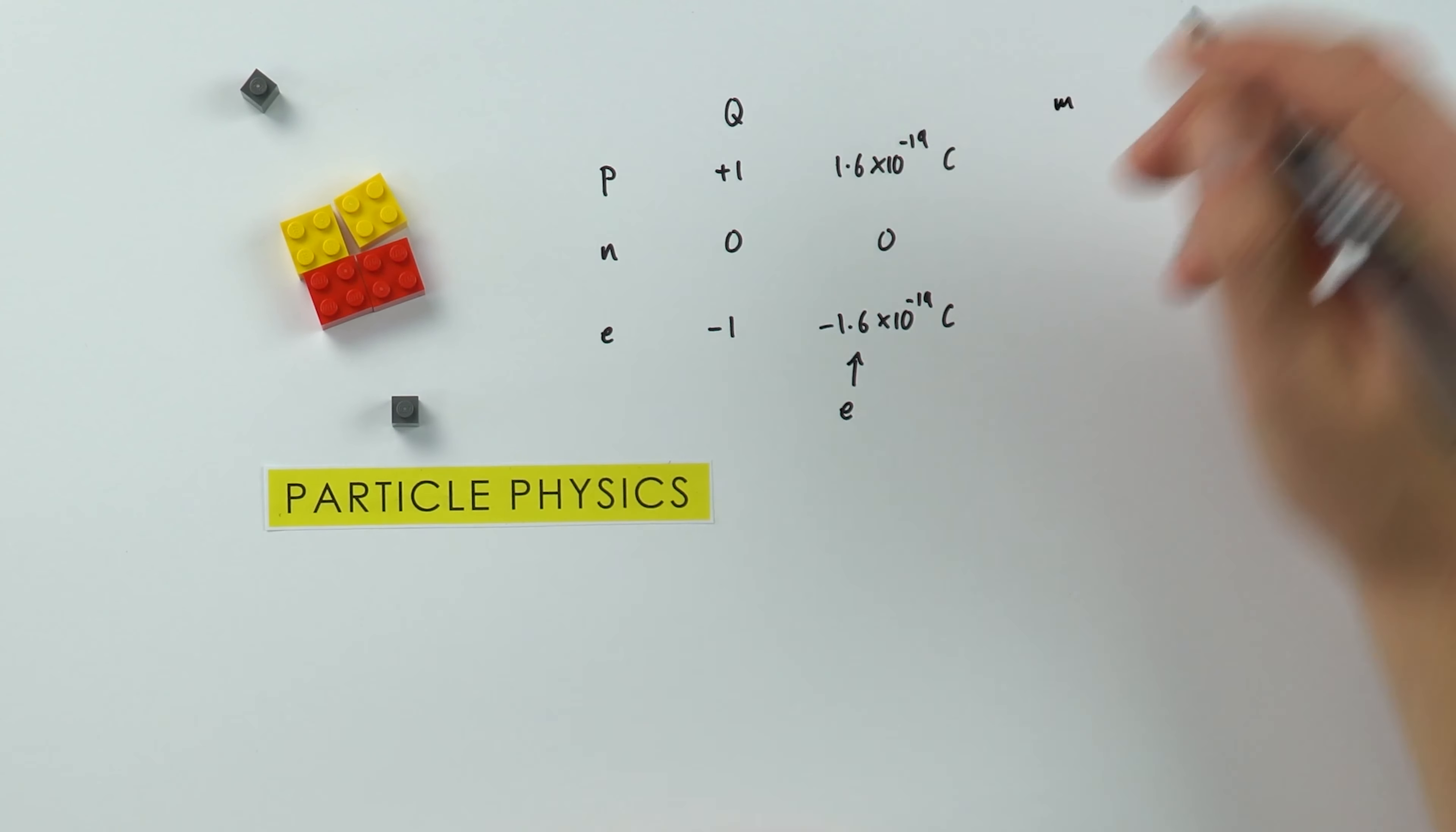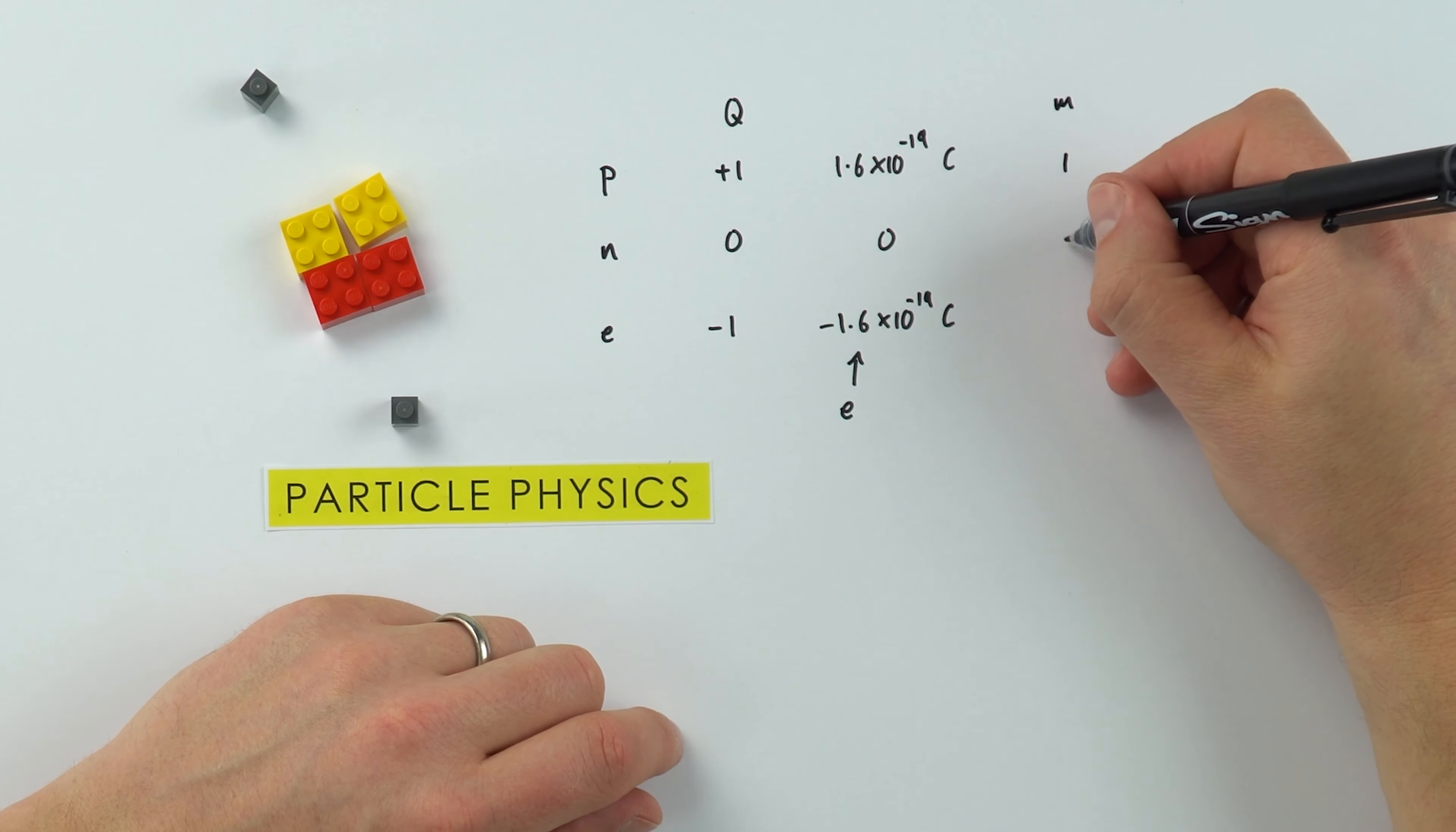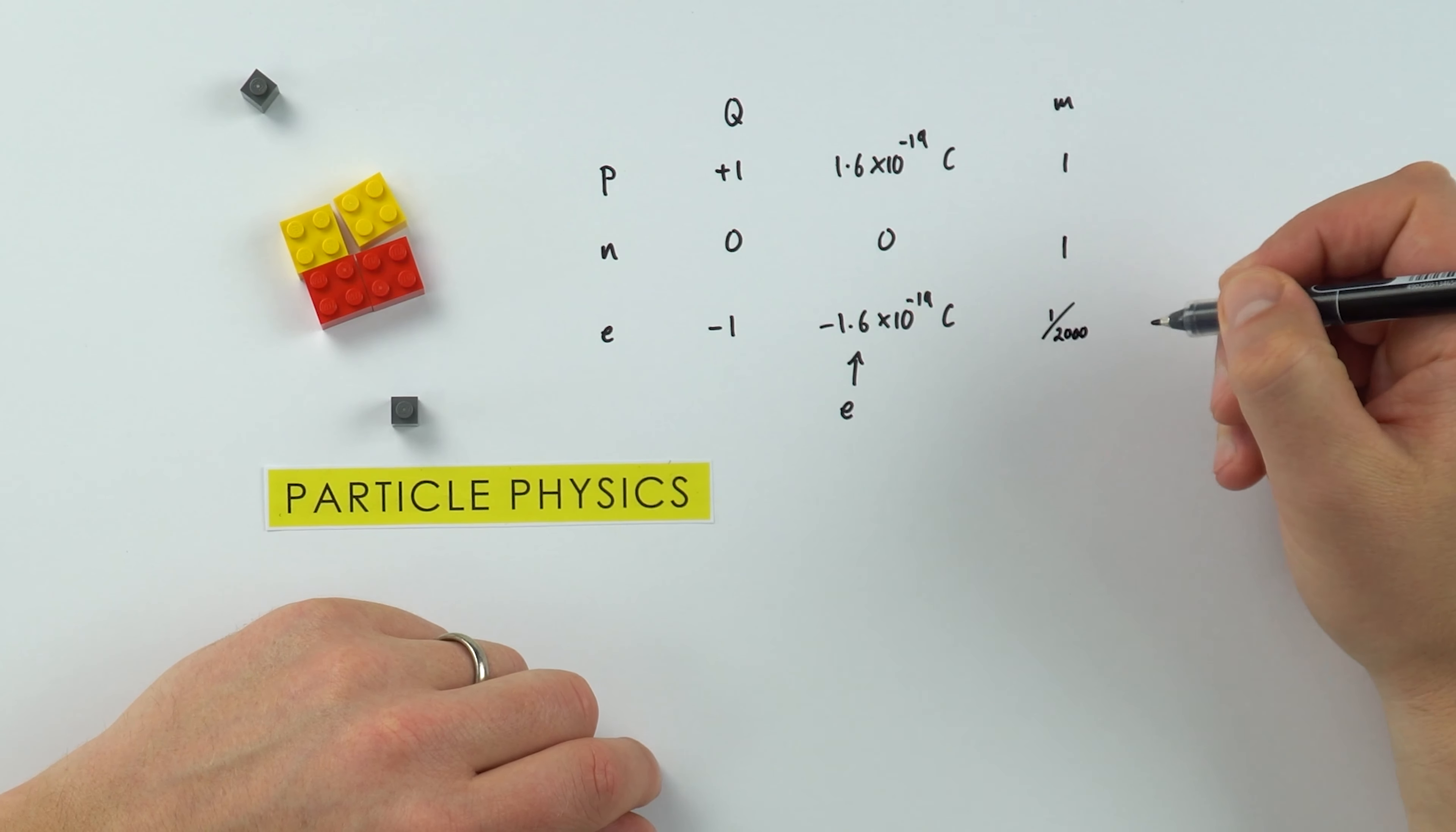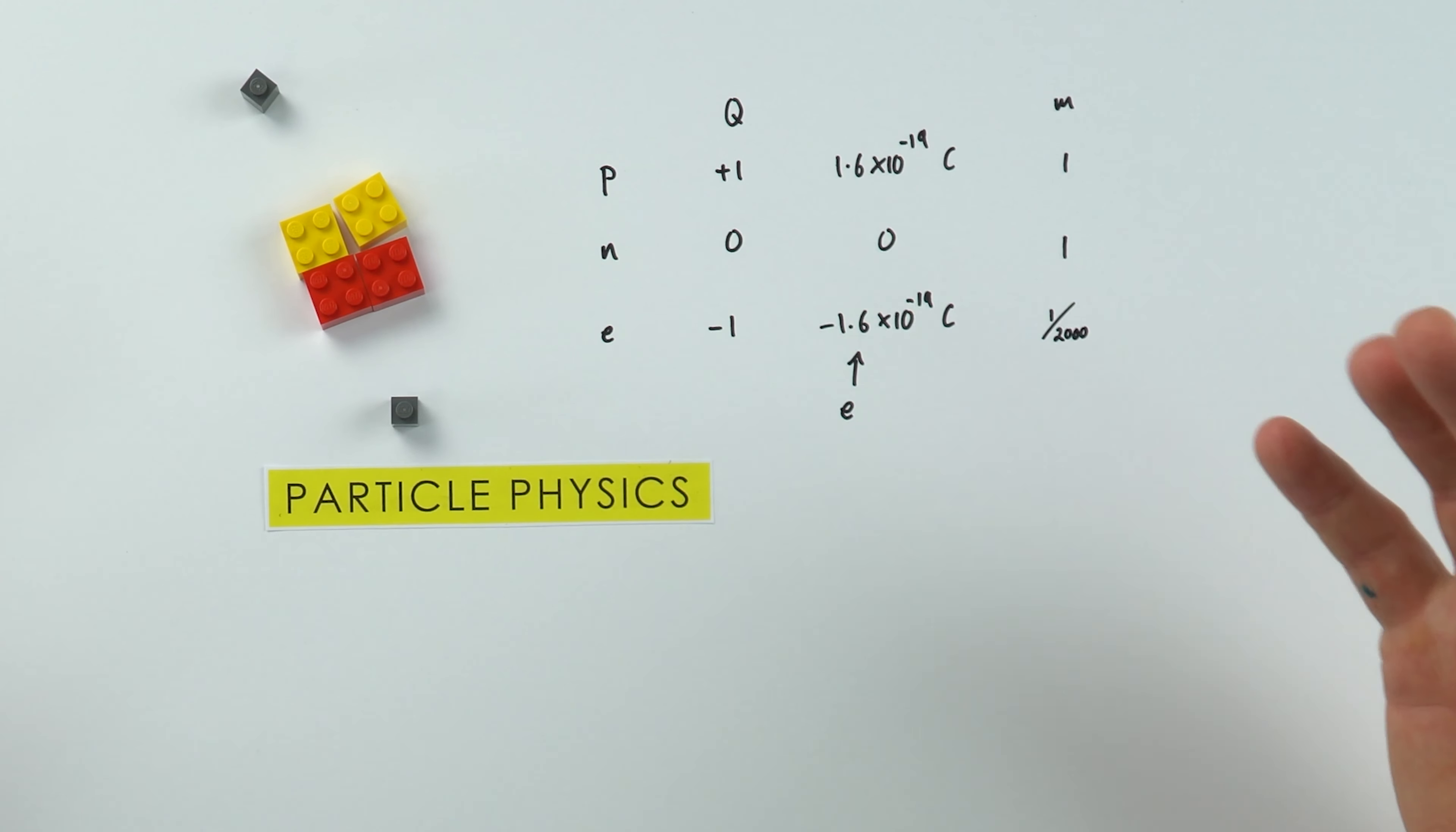Likewise with the mass, when it comes to looking at the mass of these particles we tend to say that a proton's got a mass of one, a neutron's got a mass of one, and an electron is maybe two thousandths of that. But again this is just the relative masses. We actually want to quantify this in kilograms. In actual fact if we were to take one of these protons and put it on a very small weighing scale, and it wasn't moving so this is the rest mass, we'd find that for a proton is equal to 1.673 times 10 to the minus 27 kilograms.